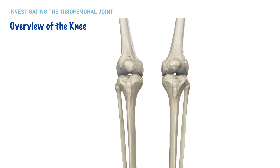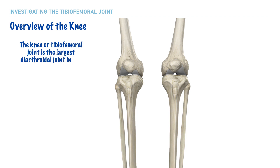Now as we explore the joint, let's first make note of the fact that it is the largest diarthrodial, or freely movable, joint within the body. Based on the name, we can note that it is made up of the tibia and the femur. The fibula is not included as part of the joint because it doesn't articulate with the knee joint. However, its presence provides benefits to both the knee and ankle joint in terms of functionality. And if we needed to classify this joint, we could refer to it as a trochoganglimus joint.